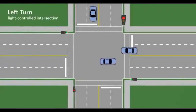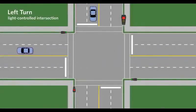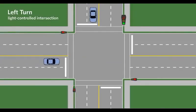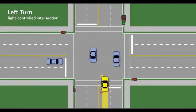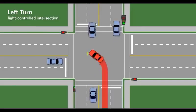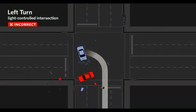Here are some common mistakes when making left turns. Advancing when the light is green but not yielding to oncoming traffic will result in a collision if there is an oncoming vehicle.